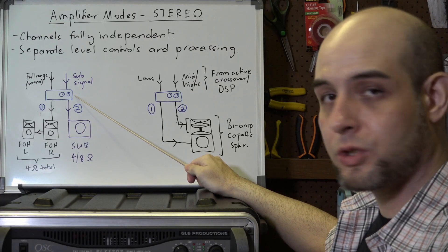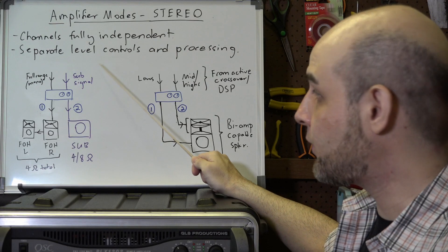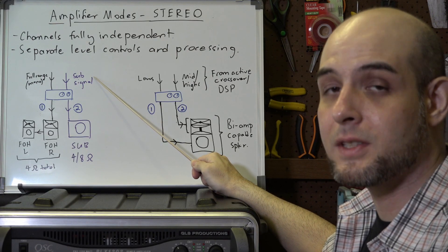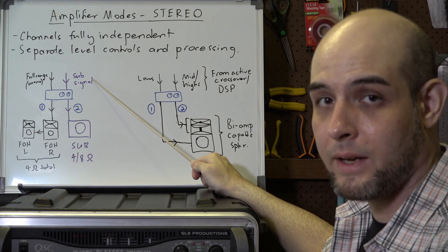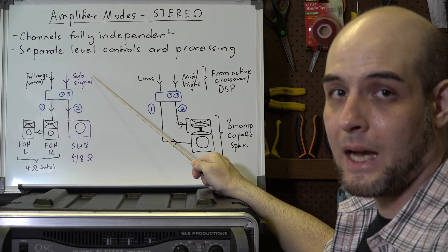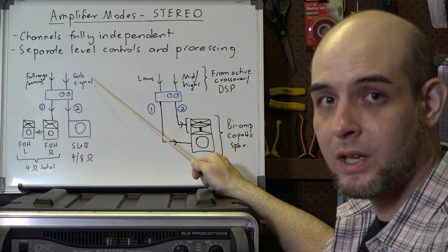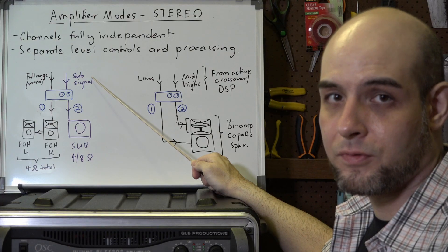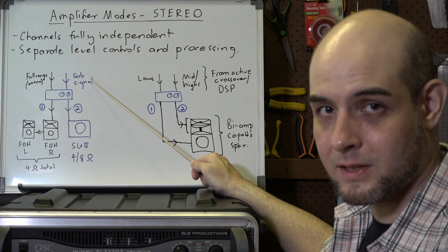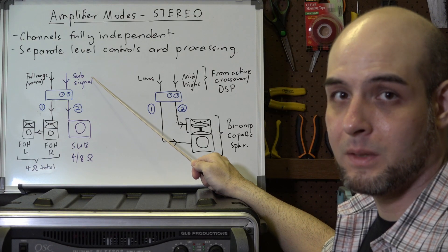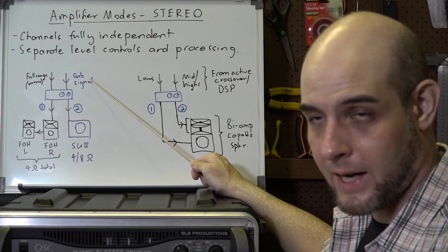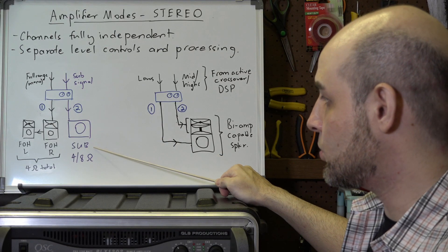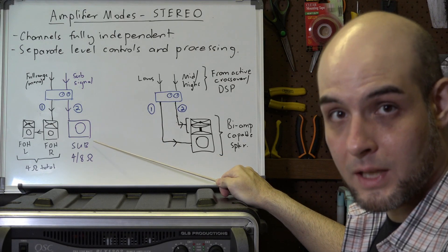Channel two is fed a subwoofer signal. This can be derived from the output of an active crossover or from a digital signal processor like a dbx DriveRack, and that signal is then used to drive the subwoofer.